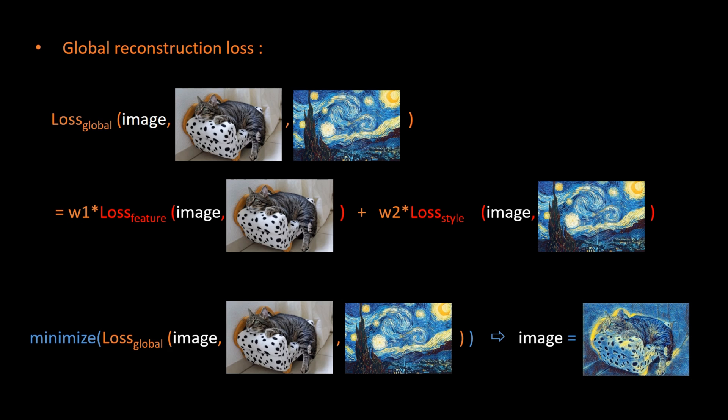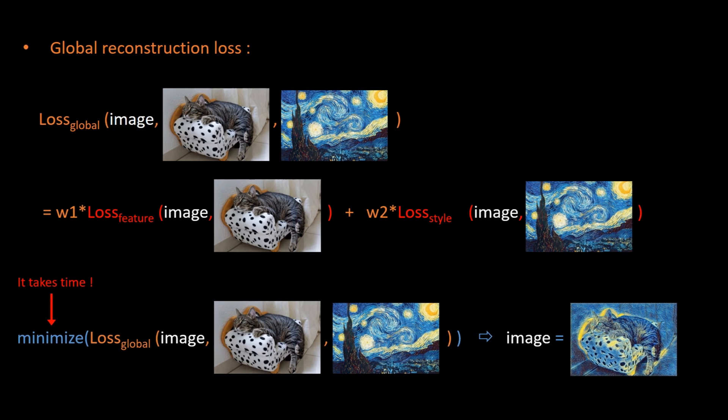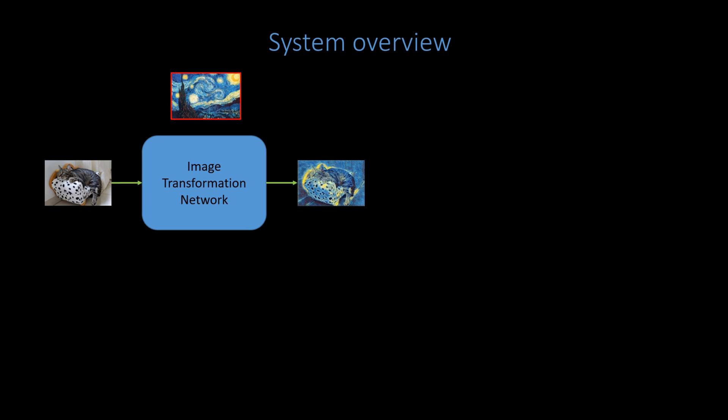So, the good news is that we have now a method for doing style transfer. The bad news is that it is not fast enough to apply in real time, because the minimization of the loss, is a slow iterative process. Fortunately, the research paper brings a clever way to address this problem. The idea is to train a neural network, to directly generate the content image into its stylized version. Of course, training a neural net, is also solving an optimization problem, but it is done only once for a given style image.